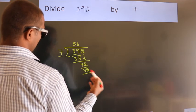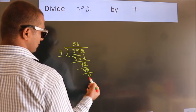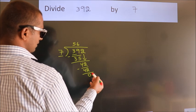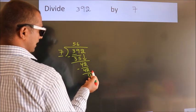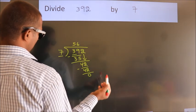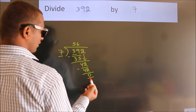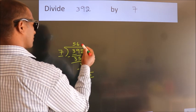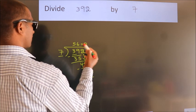Now we subtract. We get 0. After this, no more numbers to bring down. And we got remainder 0. So this is our quotient.